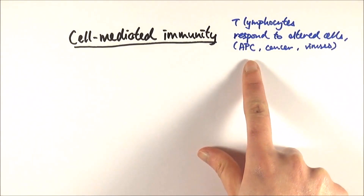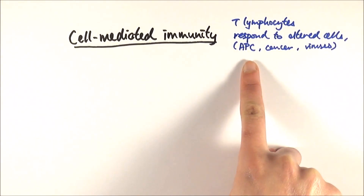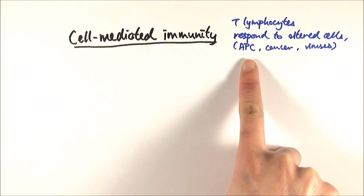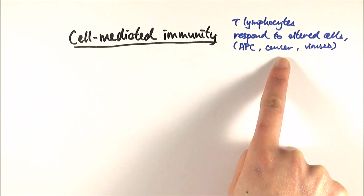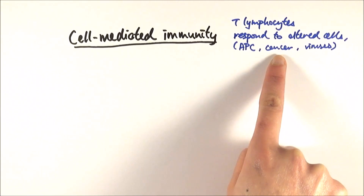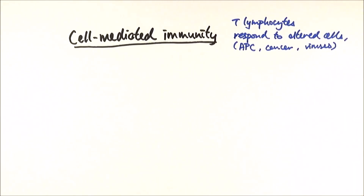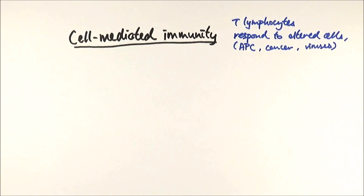Altered cells include antigen-presenting cells — for example macrophages after they've digested a pathogen. We've also got cancerous cells, which present slightly different proteins on their surface, and virus-infected cells as well. Basically, the T cells will make more of themselves and differentiate into different types of T cells to directly destroy these altered cells. That's the process in a nutshell.